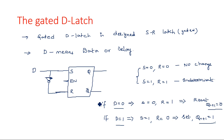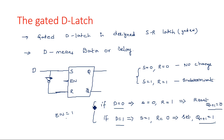One important point: all of this happens only when enable=1. These two cases occur when enable=1. If enable=0, this will not happen and the output remains the same as the previous state.